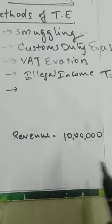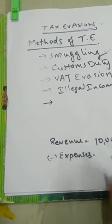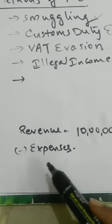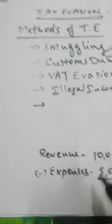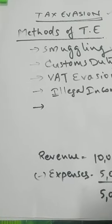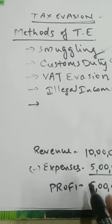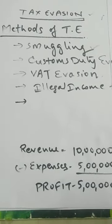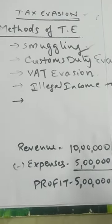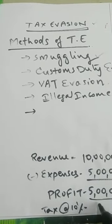Suppose our revenue is 10 lakh rupees — your total sales are 10 lakhs. To earn this revenue, you spend some amount of money, which is called expenses. Suppose your expenses are 5 lakhs. If you deduct 5 lakhs from 10 lakhs, the remaining 5 lakhs is what we call profit — the difference between revenue and expenses. As a business person, on this profit you need to pay tax. For example, at a tax rate of 10%, on 5 lakh profit: 50,000 rupees tax is to be paid.